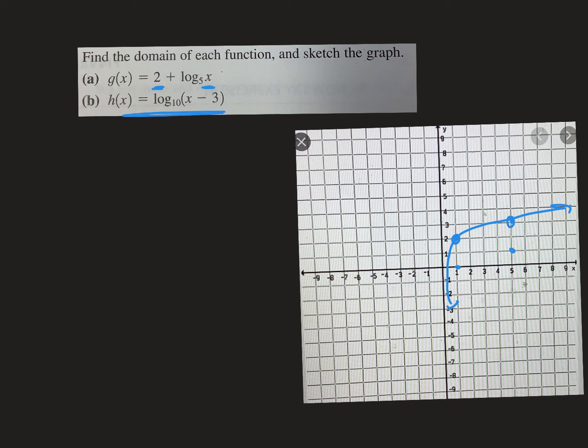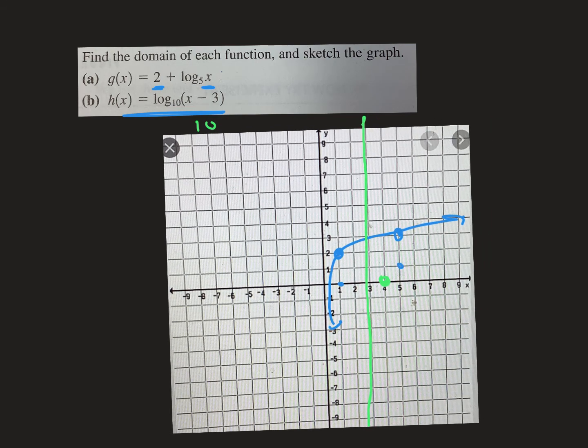Okay, this one has a minus 3 inside. This means the graph is going to be shifted right 3. So that means my asymptote is going to be shifted right 3, so the asymptote is actually going to be right here. And my first point is usually 1, 0. It's been shifted right 3, so it's going to be 4, 0. And I would love for that number inside there to be a 10 because log base 10 of 10 is 1. To make that a 10 inside, I would have to go to 13.